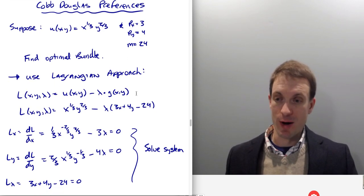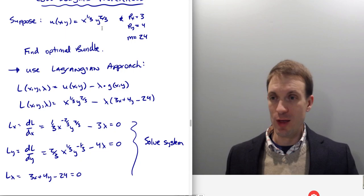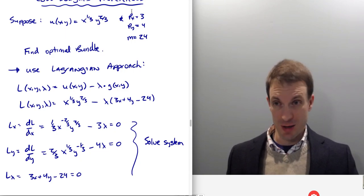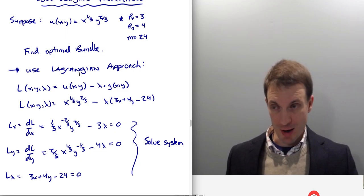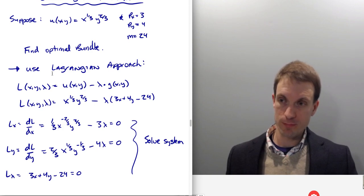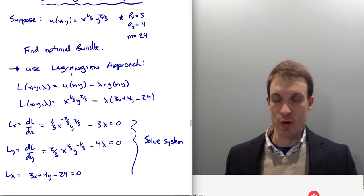Along the way, I'm gonna find my Marshallian demands, and then evaluating the Marshallian demands at these prices and income will give me my optimal bundle. So I'm gonna use a Lagrangian approach. This involves writing down my Lagrangian function, which is gonna amount to having my objective function minus my constraint. And this Lambda is gonna be a penalty for violating the constraint.